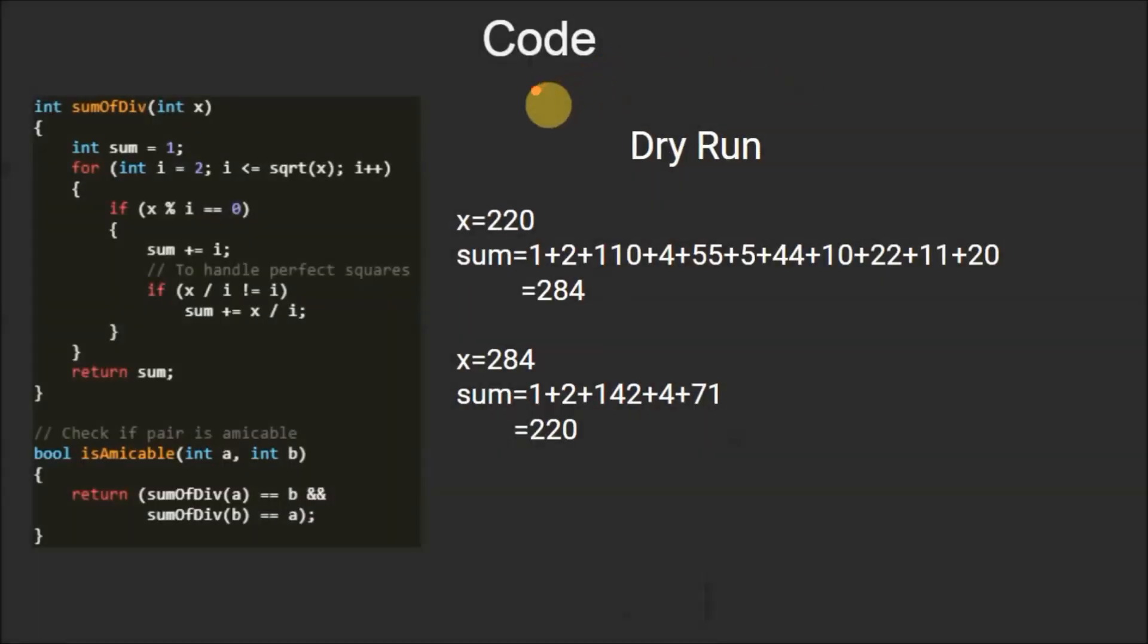So this is the code of the problem. We are having a function sum of divisors that will compute all the divisors of a number. And another function is amicable that will return 1 if the pair is amicable and 0 if the pair is not amicable. Within this function sum of divisors we are having a variable sum that will initialize with 1, as 1 is always a divisor of any number.